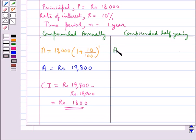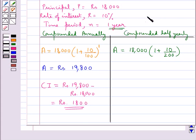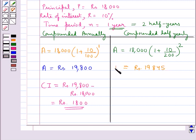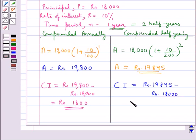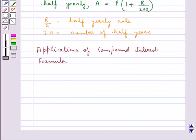Now let's calculate the compound interest when the rate of interest is compounded half yearly. The amount A is equal to the principal P, 18,000, into 1 plus 10 upon 200, whole to the power 2n. The time period given is 1 year, which has 2 half years, so 2n equals 2. This comes out to be rupees 19,845. So CI equals rupees 19,845 minus rupees 18,000, which equals rupees 1,845.